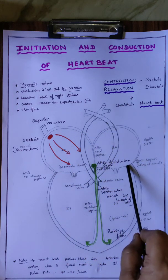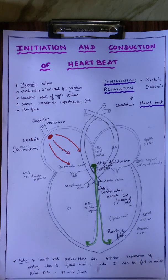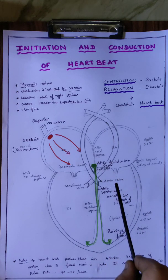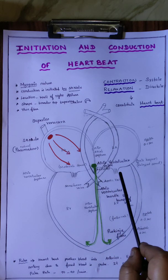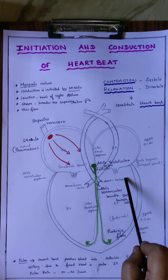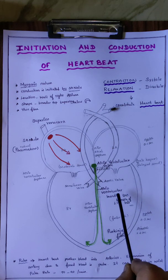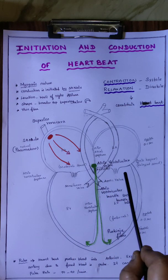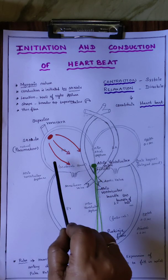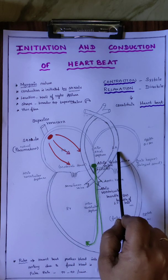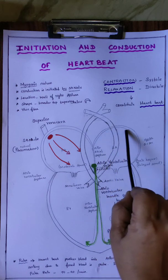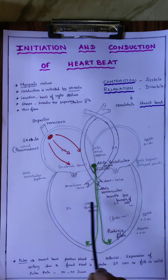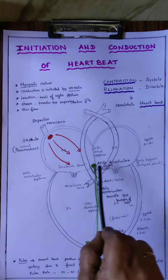The heart normally pumps to push out the blood. How does it pump? It happens with rhythmic contraction and relaxation. The contraction of the heart is called systole, and the relaxation of the heart is called diastole. This contraction and relaxation doesn't occur in the whole heart at once. First, the auricle contracts — that is auricular systole — and pushes blood to the ventricle through the tricuspid valve and bicuspid valve.